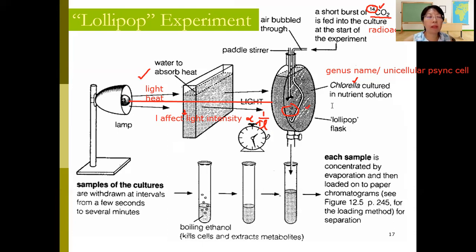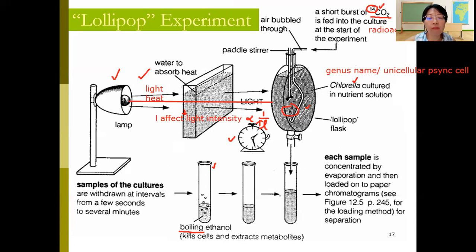The organism undergoes both the light-dependent and light-independent stages. As soon as the lamp is switched on, a timer is started. At fixed time intervals, a fixed volume of sample from the flask is taken and added to boiling ethanol. The boiling ethanol immediately denatures all the enzymes, stopping all photosynthesis reactions. Whatever products or substrates are present at that moment remain there and can be detected, as they will not be converted to anything else.